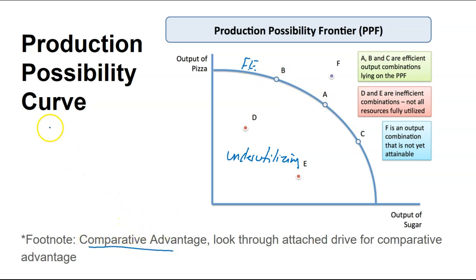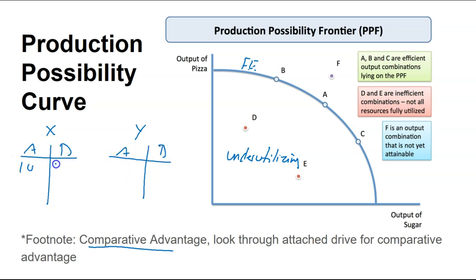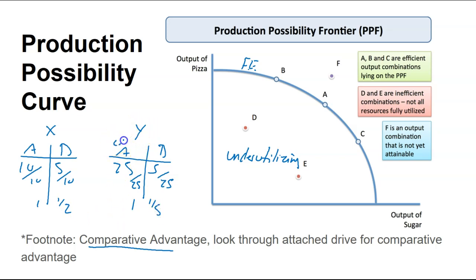You definitely use this for things like comparative advantage, where you have X and Y that can produce goods A and B, and you figure out the comparative advantage for each. For instance, Y would have the comparative advantage in production of A, since they give up one-fifth of B when they produce one unit of A, whereas X gives up one-half of B — they have a higher opportunity cost. Also things like terms of trade, trade range, and economic gains can all be done with this.